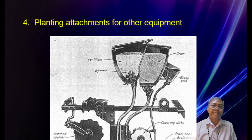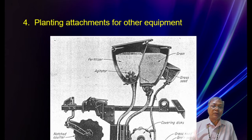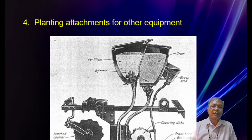Number four is planting attachments for other equipment. An example is a multi-purpose or pasture drill. The coulter tine opens the soil, fertilizer is dropped, followed by grain and grass seed, and then the mechanism covers the soil back.